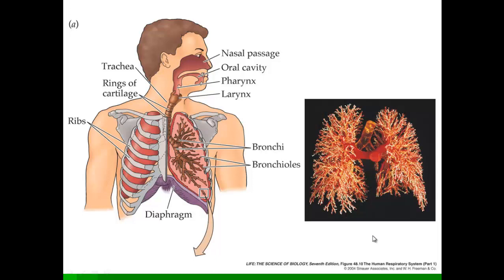In general, the structure looks kind of like this. You probably figured out the lungs were in there. The rib cage is protecting your lungs. You may have heard of people breaking their ribs and the ribs going in and actually puncturing a lung — that doesn't sound like a good situation. Underneath, you have something called a diaphragm. This entire tube here is called the trachea.